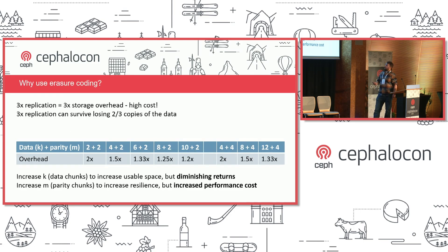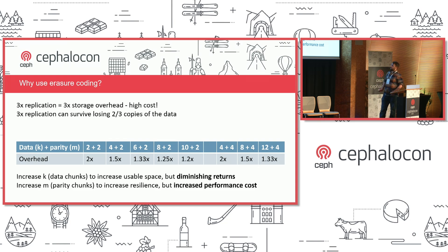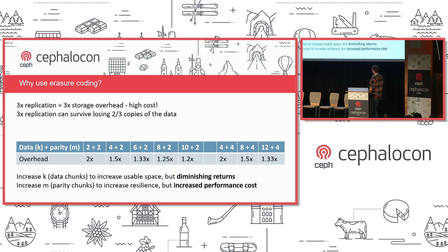So why use Erasure Coding? When you create a new pool in Ceph, you need to decide how you're going to protect your data. You can choose replication, where we create copies of your data across the pool, or Erasure Coding, where we take each object, split it into equal-sized chunks called K, and then ask a plugin to generate additional equal-sized parity chunks for redundancy called M. With three-times replication, you can survive losing any two copies, but for every one terabyte of data, you need three terabytes of storage — that costs a lot of money.